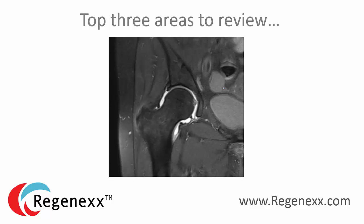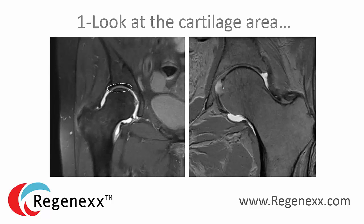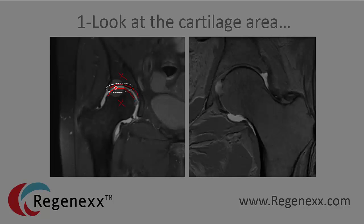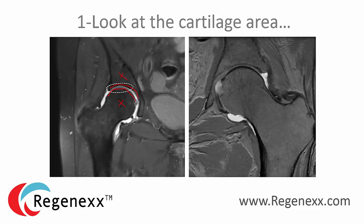Let's go over the top three areas to review. Number one: look at the cartilage area. You can see in this image that you've got dark bone here and dark bone here, and then you've got the ball in its socket. The gray stuff between my two red lines is the cartilage — you should have gray stuff in there. If you don't have much cartilage, that's arthritis.